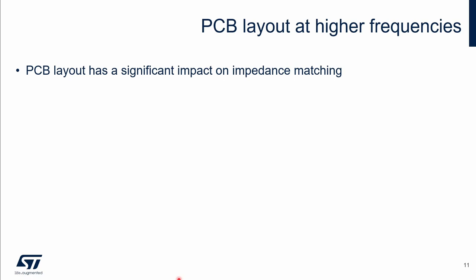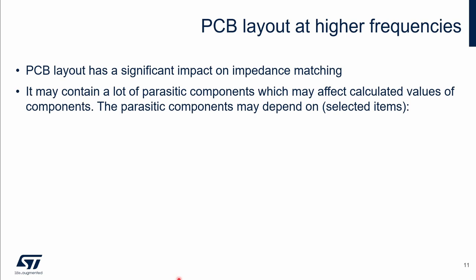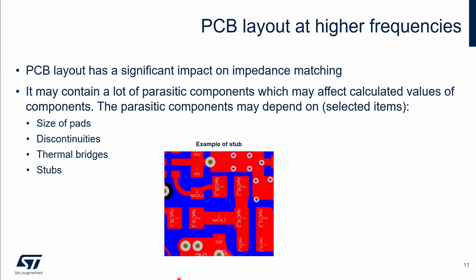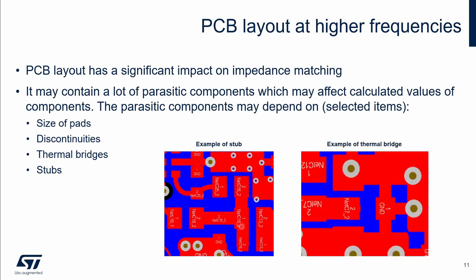A PCB layout has a significant impact on impedance matching and the measurement. It may contain many parasitic components which can affect calculated values of components. The parasitic components may depend on, for example, the size of pads, discontinuities, thermal bridges, and stubs. Here is an example of a stub: if one end of a trace is not fitted, the open-end impedance can be transformed to another impedance at the opposite end, which can affect the original parameters of the circuit. In the case of thermal bridges, they add additional parasitic inductance.